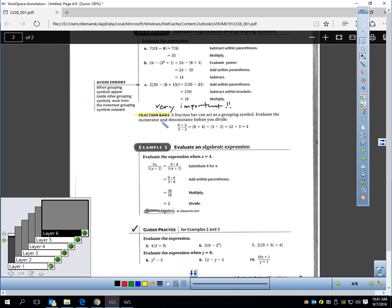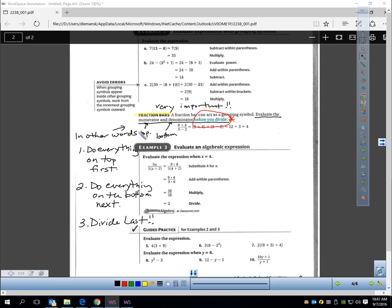Let's talk about a fraction bar. Fraction bars are very important. Look at what it says here for a fraction bar. You evaluate the numerator and the denominator before you divide. Let's review those words. Numerator is the top of a fraction. Denominator is the bottom of a fraction. Evaluate the numerator and denominator before you divide. In other words, let me put this in my own words. Do everything on the top first. Do everything on the bottom next. You divide last. You've got to follow these rules when you have a fraction bar. A fraction bar is one of those horizontal bars where you see the top and bottom of a fraction.